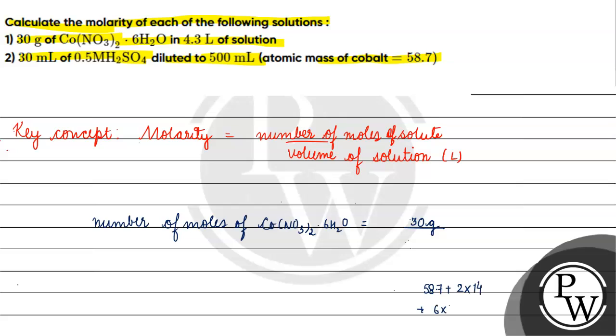The molar mass calculation: cobalt is 58.7, nitrogen is 2×14, oxygen atoms 6×16 plus 6×18. This comes to 291 grams per mole. So we have 30 divided by 291 grams per mole.